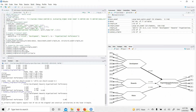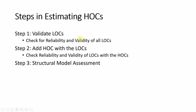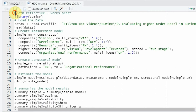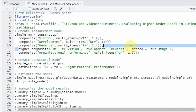Now that you are done with step 1 — that is, your lower-order constructs are done and you have assessed their reliability and validity — obviously, if there are issues of reliability and validity, you deal with them as you did earlier. Now we are going to add the higher-order construct with the lower-order construct. The same setup applies, but one thing that we do differently here is we are going to add a particular function.